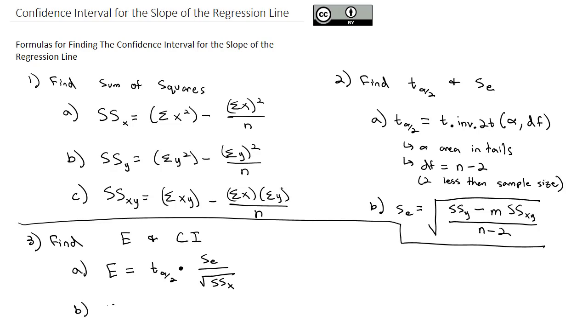The confidence interval, once we have that error calculated, is the slope we found from our sample minus the error, comma the slope we found from our sample plus the error, and that will be our final confidence interval.